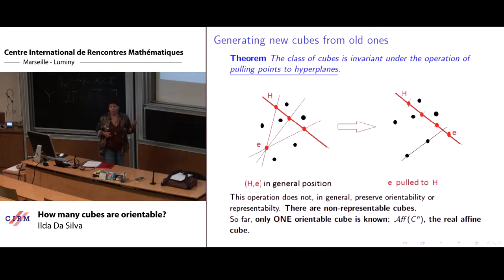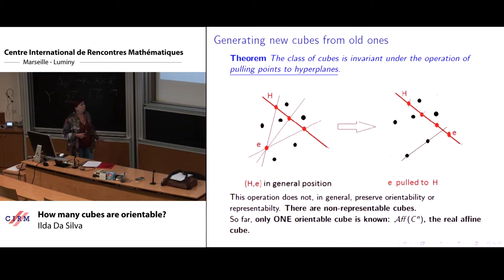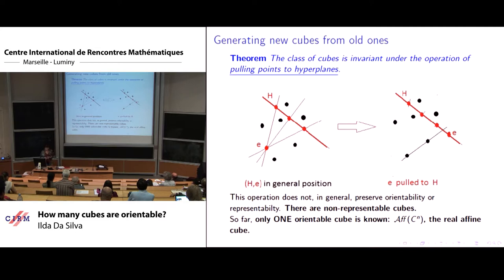Now, when we come to orientability, to study orientability of this class, this is a huge class which is not closed under minors, it's not well behaved under these nice things. But so far, we only know one orientable cube, which is the real affine cube. Whenever this appears, it is the real affine cube.